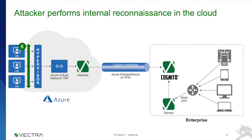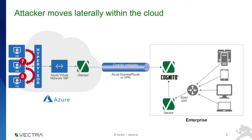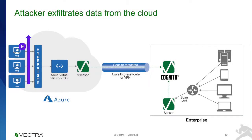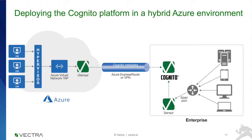Once they establish a beachhead on a cloud server in that environment, they repeat the entire process of performing internal reconnaissance — except now they do it in the cloud environment against other servers they're connected to and the workloads they were able to access. As they again identify exposed credentials or exposed services, the attacker starts to move laterally within the cloud environment, continually gaining access to more and more systems, with the ultimate goal of exfiltrating critical data from cloud environments.